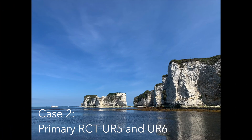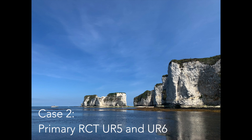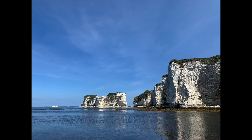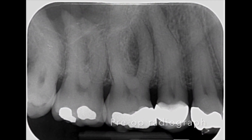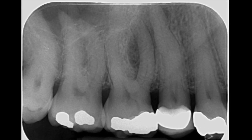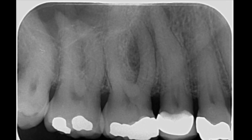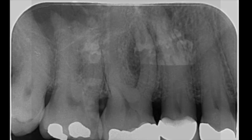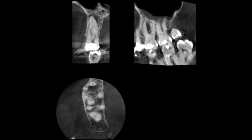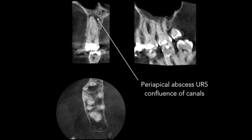On to case two now, and this is a maxillary first molar with very long roots and calcification in the pulp chamber. The preoperative radiograph shows the maxillary right first molar. The tooth is restored with an amalgam and has calcification in the pulp chamber. A CBCT clearly shows periapical radiolucency. The tooth is going to need root canal treatment.